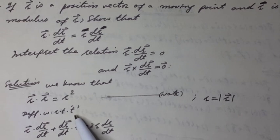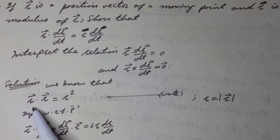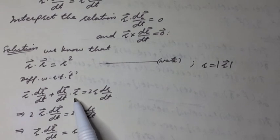Differentiating with respect to t and using the rule of differentiation, we have R vector dot dR vector over dt plus dR vector over dt dot R vector equal to 2R dR over dt. It can be written as 2R dot dR vector over dt because scalar product is commutative, equal to 2R dR over dt.